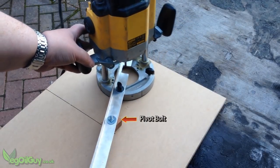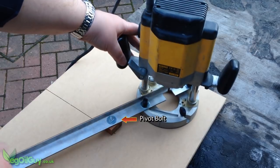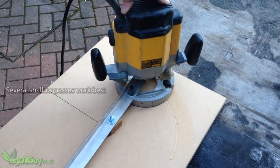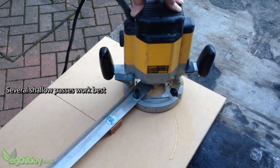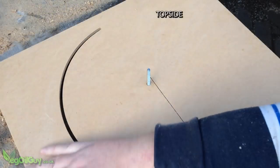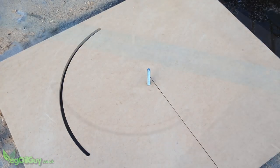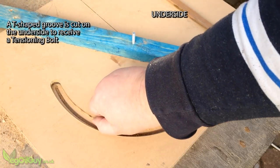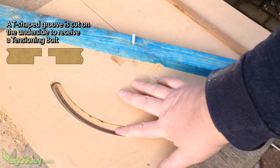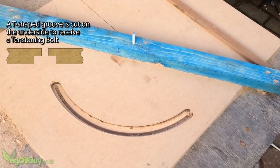I fixed a scrap of angle iron to my router and used the pivot bolt to form a compass. I then used a narrow router bit and cut out a curved slot. With that done, on the underside I used a wider router bit and cut down roughly halfway to produce a T shaped slot.